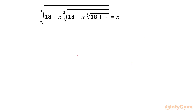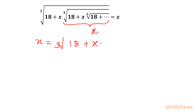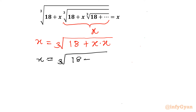Let's get started. If you observe, this inner term is again x. So this equation will become x is equal to cube root of 18 plus x times x. Now x times x is x squared, so the equation becomes x equals cube root of 18 plus x squared.